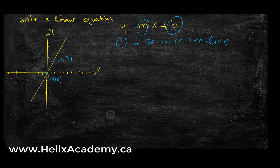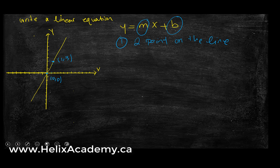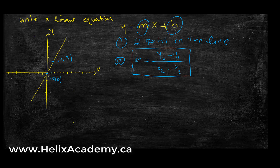Once I have m and b, I can write the equation of the line. To find the slope m, there's a formula: m equals y2 minus y1 over x2 minus x1. I'm sure you've seen this in your textbook. What we're going to do is label our points and plug them in to find our slope.